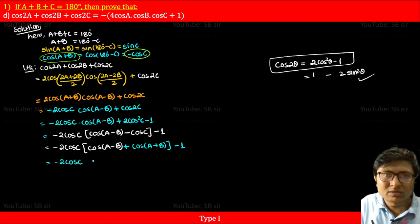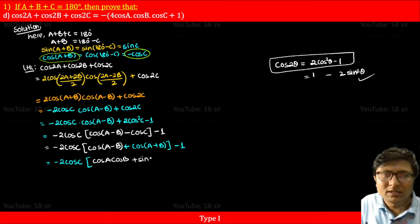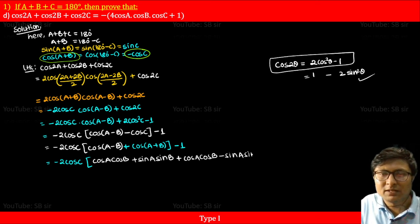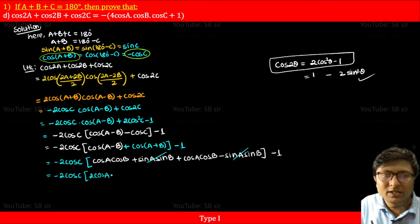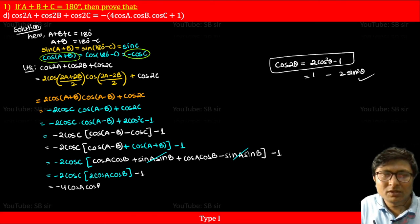Now we can use the compound angle formula. cos(A-B) equals cosA cosB plus sinA sinB, and cos(A+B) equals cosA cosB minus sinA sinB. Adding these two: cos(A-B) plus cos(A+B) equals 2cosA cosB, since the sinA sinB terms cancel. So what remains is minus 2cosC times 2cosA cosB, minus 1, which gives minus 4cosA cosB cosC minus 1.